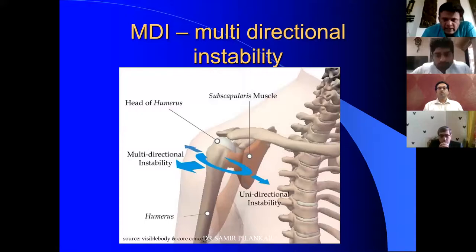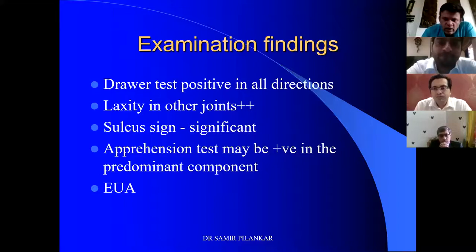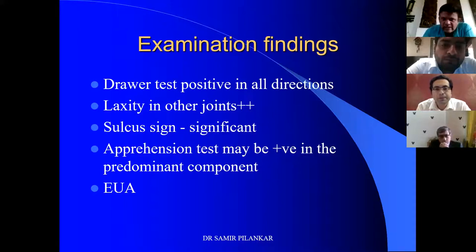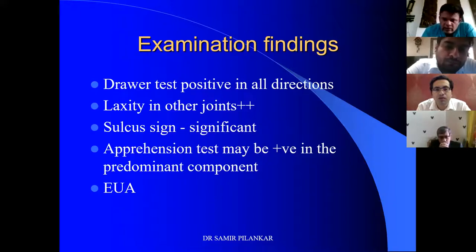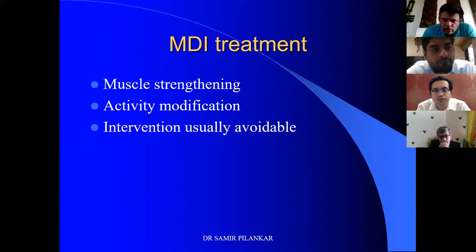Multidirectional instability is very tricky. These patients show instability in all directions; some have pain and laxity in other joints. The sulcus test is grossly significant — more than three fingers. Some patients may have a degree of apprehension in the predominant component. Examination under anesthesia will confirm the multidirectional nature of instability. Treatment is usually non-operative; any operative intervention usually results in very poor results and recurrence. Treatment is muscle strengthening, activity modification, and these patients are to be left alone with physiotherapy.